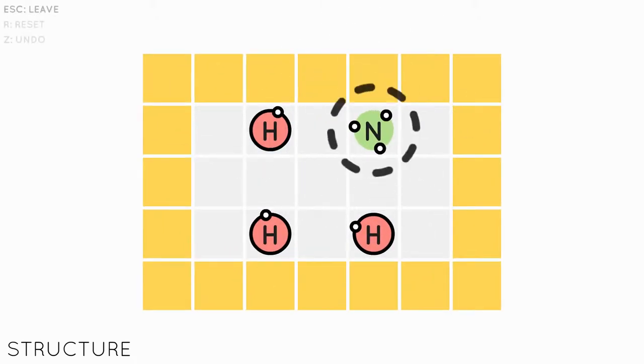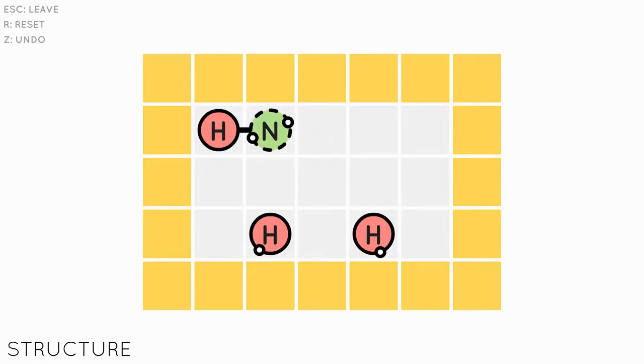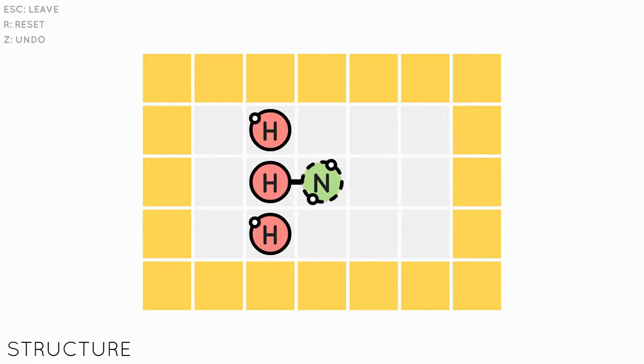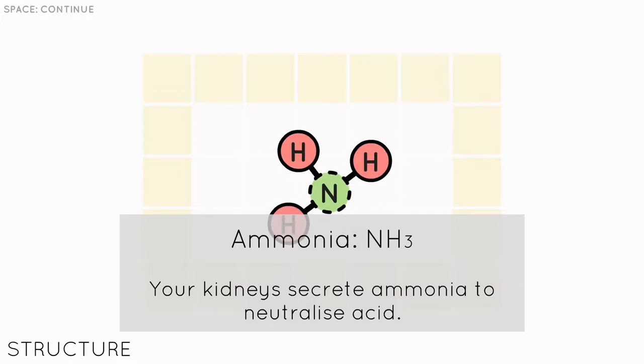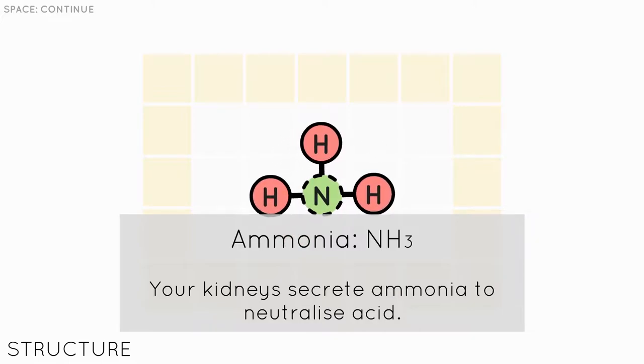Structure. Alright so let's just see how we do this. No I think I did it wrong. Already I did it wrong. That's how we do it. Ammonia NH3. Your kidneys secrete ammonia to neutralize acid.